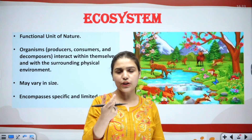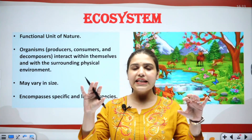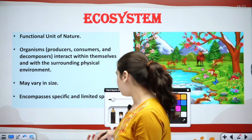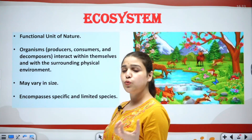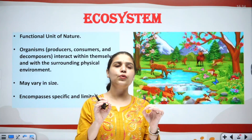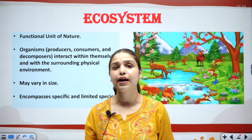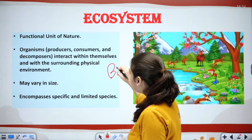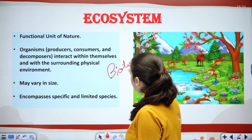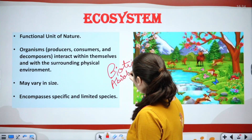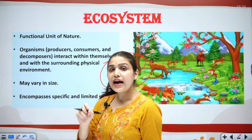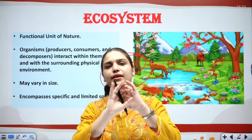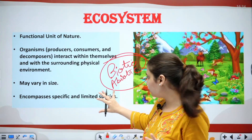Before ecosystem, let's talk about environment. What is environment? In basic terms, if we have to phrase it in one sentence: environment in simple words is our surroundings — the surroundings in which we live. Environment comprises all your biotic components, which are your living components, and your abiotic components, which are your non-living components.